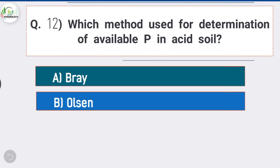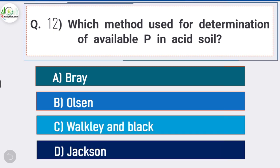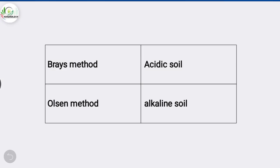Question number twelve: which method is used for the determination of available phosphorus in acidic soil? Answer is option A, Bray method. Available phosphorus in acidic soil is determined using the Bray method. The Olsen method is used for estimation of phosphorus in alkaline soil.